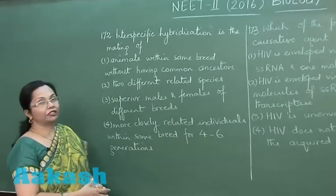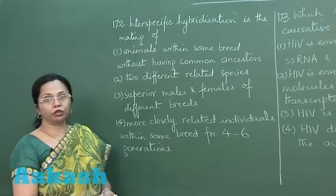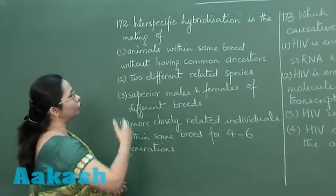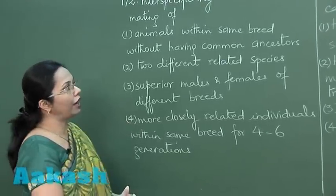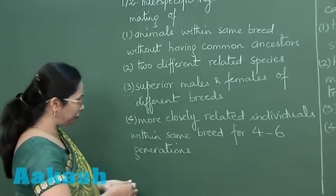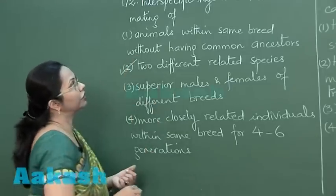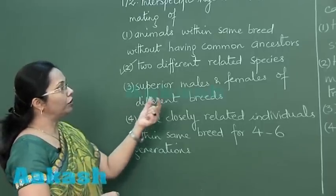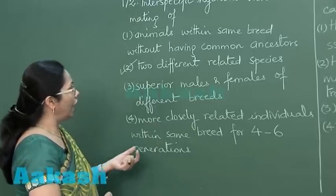Question 172 covers inter-specific hybridization, which means mating between two different species. Looking at the answer choices: animals within the same breed without common ancestors would be inbreeding; two different related species — that is inter-specific hybridization; and superior males and females of different breeds would be crossbreeding.